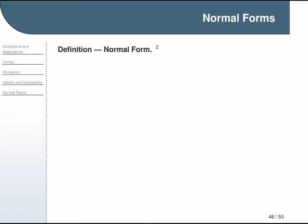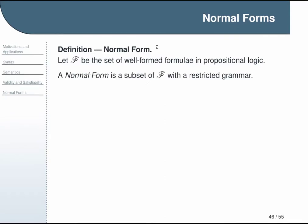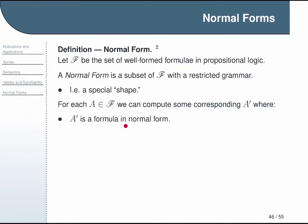This definition is my attempt to say generally what a normal form is in logic. If F represents the set of all well-formed formulae in propositional logic, a normal form is a subset of F with some restricted grammar. In other words, it has a special shape in which only certain operators and expressions are allowed. For every formula A from our big set of possible formulas, there's some corresponding A' where A' is a formula in normal form and either it's equivalent to A or it's equisatisfiable with A.